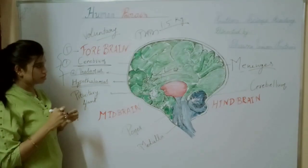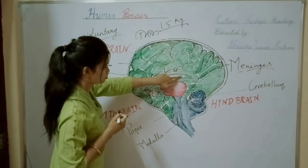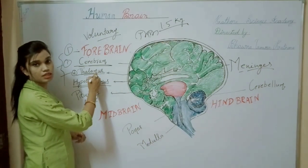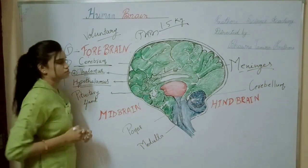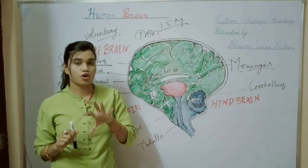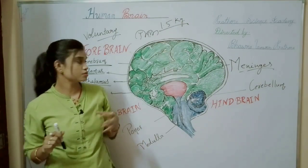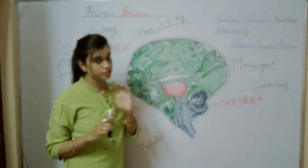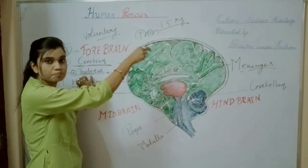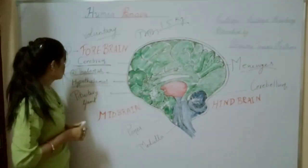The second sub-part of the forebrain is the thalamus. This portion here is known as the thalamus. What is the function of the thalamus? The thalamus basically provides all impulses — that is, sensory and motor impulses — to the brain. It works as an information collector.